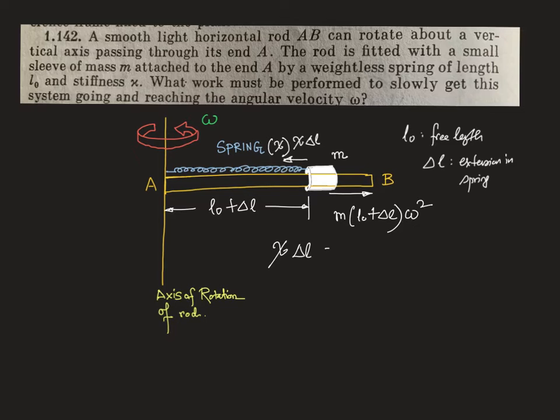You can equate this: chi times delta l equals m times (l0 plus delta l) times omega squared. So this is one equation.